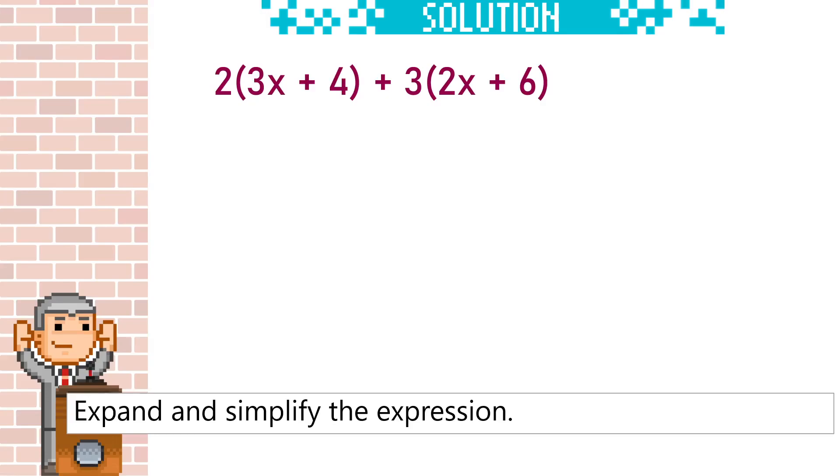Here we have two sets of brackets we need to expand. 2 times 3x is 6x, 2 times 4 is 8, 3 times 2x is 6x, 3 times 6 is 18. We can simplify this by collecting the like terms. 6x plus 6x is 12x, 8 plus 18 is 26.